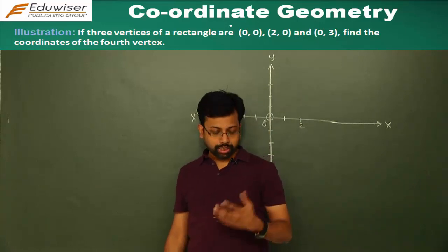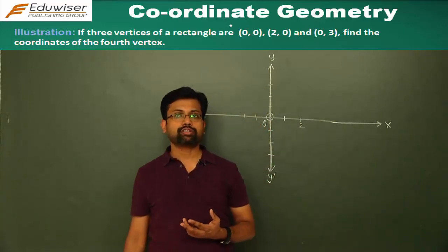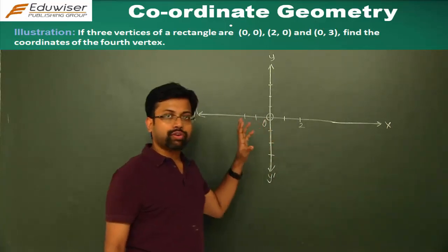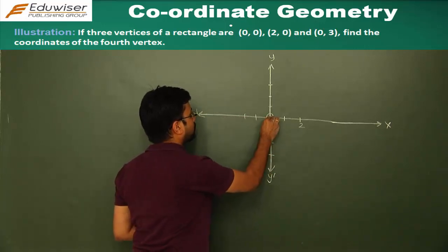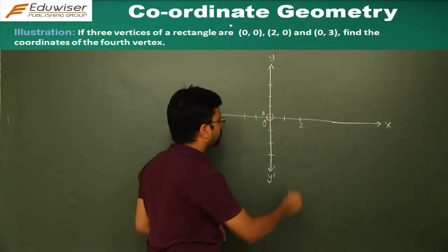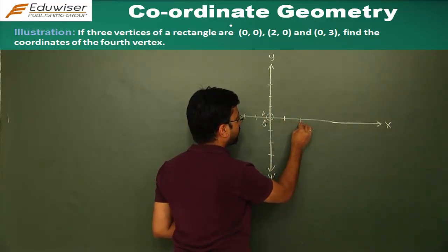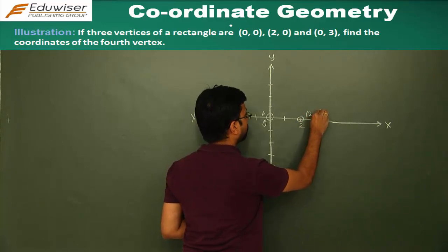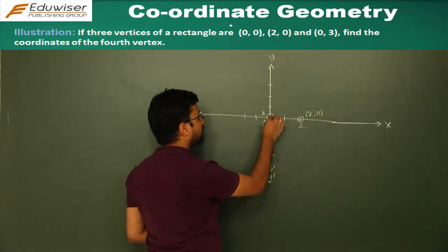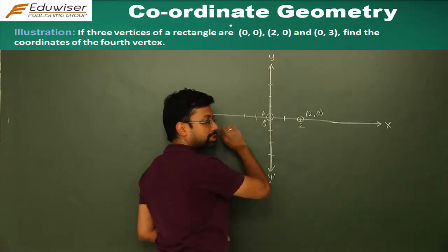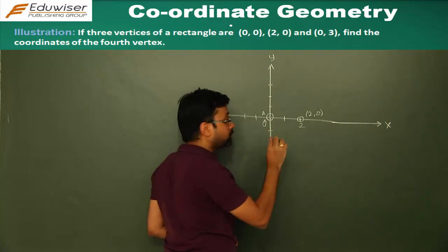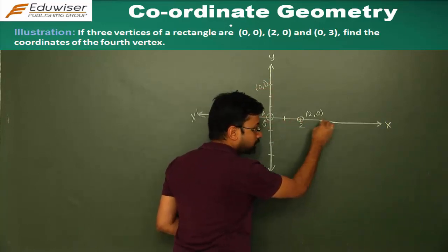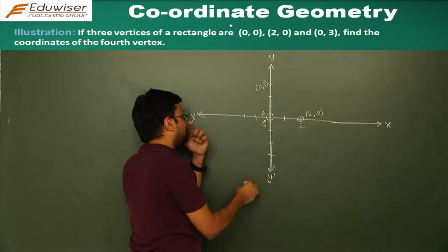In the next question, three vertices of a rectangle are given: (0,0), (2,0), and (0,3), and we have to find the coordinates of the fourth vertex. We first plot the three given points. The first point (0,0) is the origin. The second point (2,0) is 2 units along the x-axis, so it lies on the x-axis. The third point (0,3) has x-coordinate 0 and y equals 3, so it lies on the y-axis.